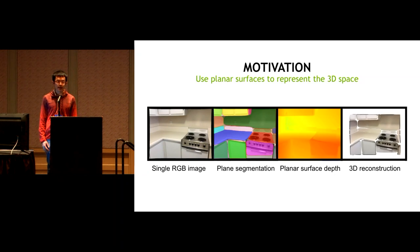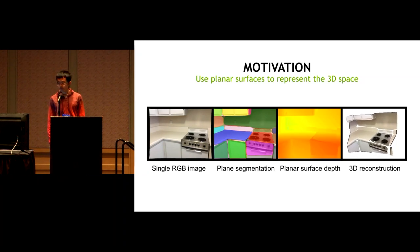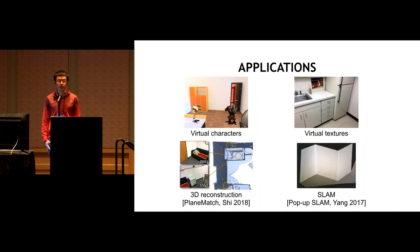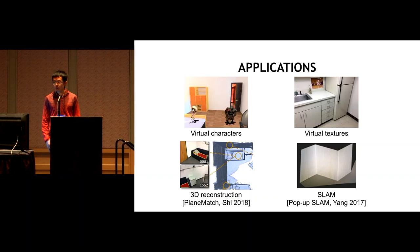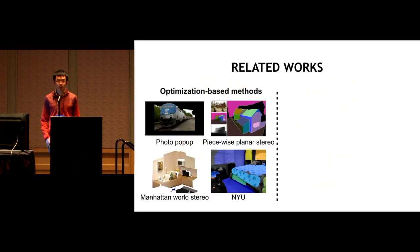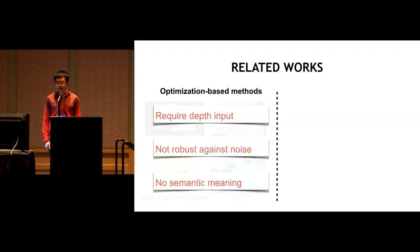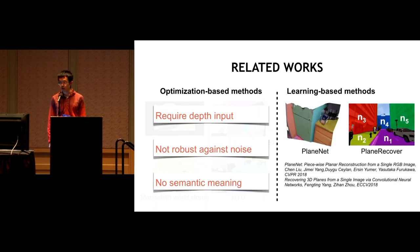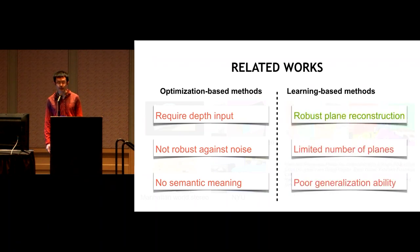For example, we can place virtual textures and characters based on detected geometry, and use the reconstructed planes for SLAM. Many existing works tackle this by generating plane hypotheses and merging them via optimization, but these methods require depth input, lack robustness, and the reconstructed planes have no semantic meaning. Recent deep learning methods reconstruct planes robustly but can only reconstruct a limited number and lack generalization.